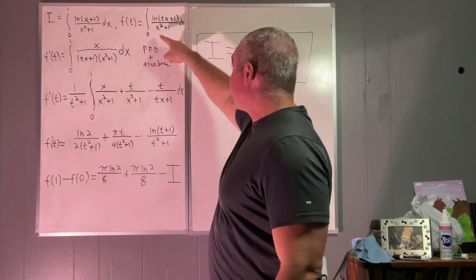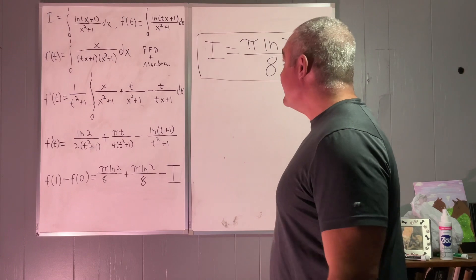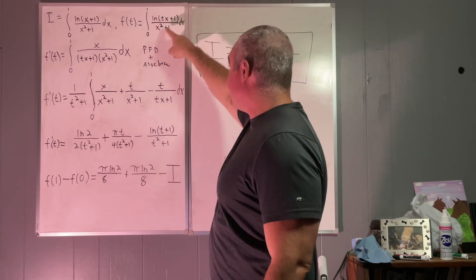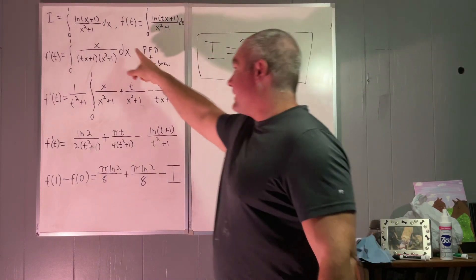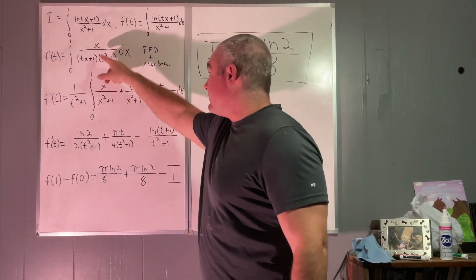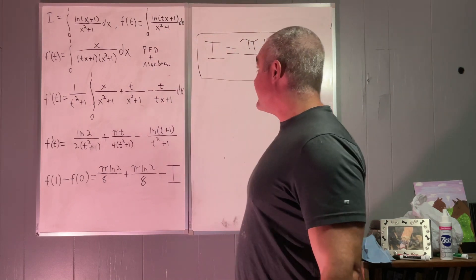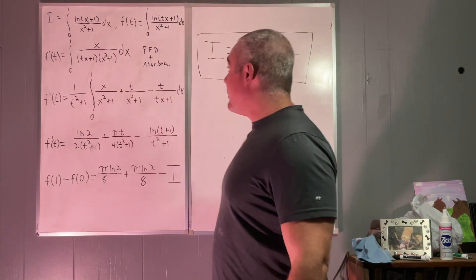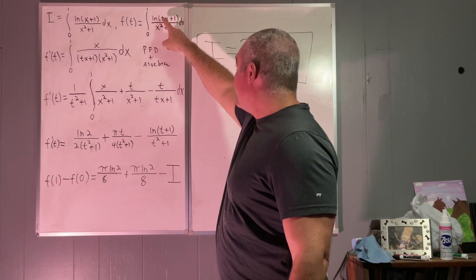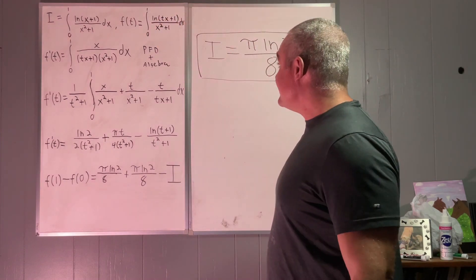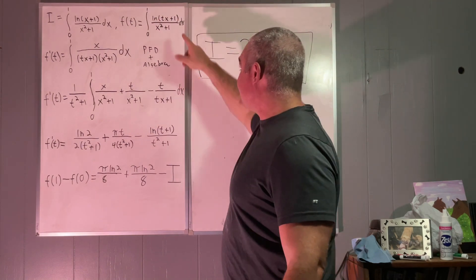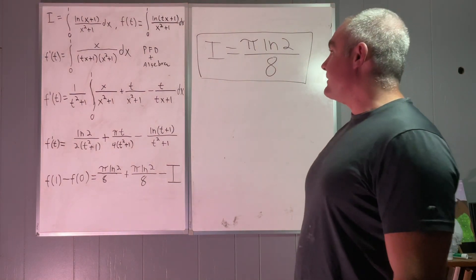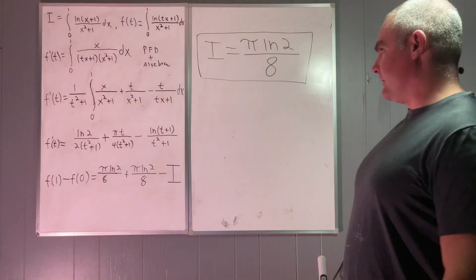Basically it says you can take the derivative with respect to t of the entire function by simply taking a partial derivative with respect to t of the integrand. The x squared plus 1 in the denominator comes from that term being a constant when differentiating with respect to t. The tx plus 1 in the denominator comes from differentiating the natural log of tx plus 1 with respect to t — you get 1 over that times the derivative of the inside, which is just x. So f prime of t equals the integral from 0 to 1 of x over (tx plus 1)(x squared plus 1), dx.